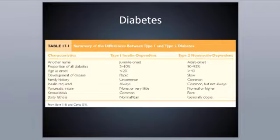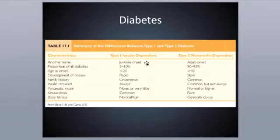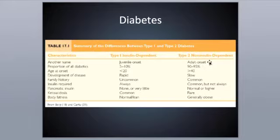Looking at a table from the book: Type 1 was formerly called juvenile onset, and younger individuals are typically diagnosed early in life, making them insulin dependent for most of their lives. They need to ensure they have exogenous insulin available in case blood sugar gets too high. Type 2, known as adult onset, accounts for most diabetes cases, though we need to be cautious about that label now.